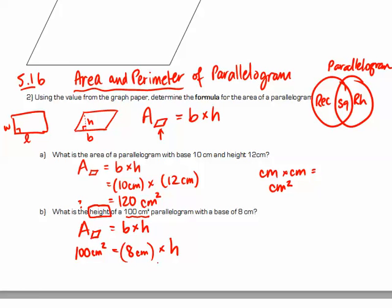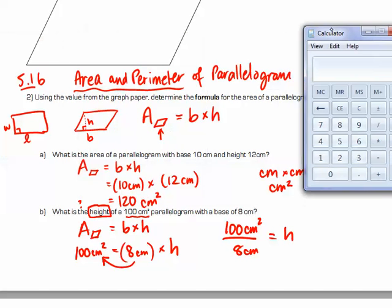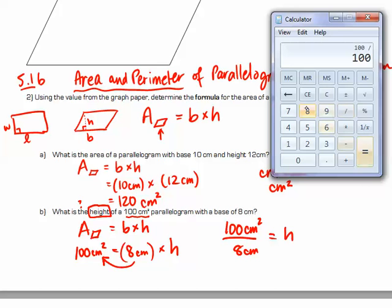Now how do we solve this? In our heads, we have to ask ourselves, 8 times what gives 100? Well, this might be a tricky question, so we can undo this problem by doing division. So 8 times something gives 100 is the same thing as 100 divided by 8 gives that something, or that height. Now on our calculators, we do 100 divided by 8. So let's just pull up this calculator over here. 100 divided by 8, and I get 12.5.